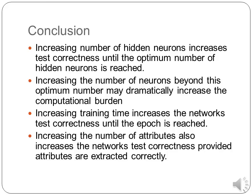Conclusion: from the several experiments, increasing the number of hidden neurons increases test correctness until the optimum number of hidden neurons is reached; beyond this, the network does not improve significantly and computational burden may increase dramatically. Increasing the number of epochs or training time increases test correctness until the optimal epoch is reached. Increasing the number of attributes also increases the network's test correctness, provided attributes are extracted correctly.